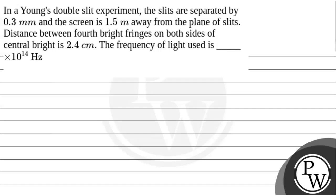So, let us see the question. The question is: In a Young's double slit experiment, the slits are separated by 0.3 mm and the screen is 1.5 meter away from the plane of slits. Distance between 4th bright fringes on both sides of central bright is 2.4 cm. The frequency of the light used is blank.